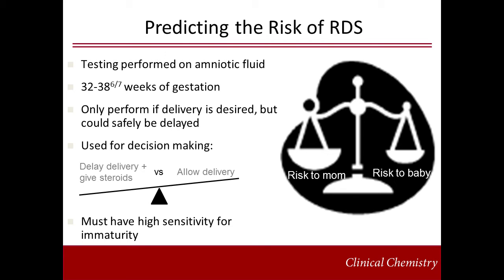This testing is really only useful between 32 and 39 weeks of gestation. Prior to 32 weeks, the infant stands the risk of other morbidities associated with preterm birth, such as intracranial hemorrhage, inability to eat, or maintain body temperature. FLM testing should only be performed if delivery is desired but could be safely delayed. ACOG guidelines do not recommend FLM testing if delivery is mandated for fetal or maternal indications. If delivery must occur in order to prevent morbidity or mortality in the mother, then there's no point in FLM testing. These tests allow physicians to make decisions about delivery by weighing the risk to mom of not delivering versus the risk to the baby of delivering.